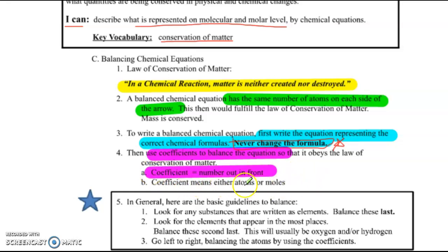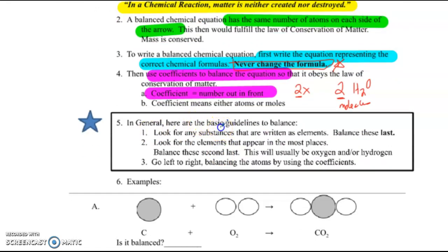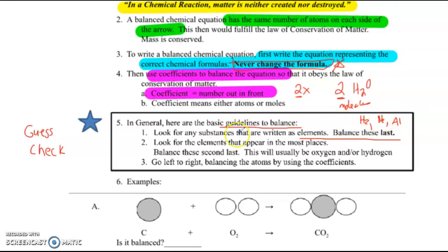What you can do is use coefficients to balance the equation. Coefficients are numbers out in front, and they mean we can read it as number of atoms or moles. Like in math class, if you had 2x, 2 is the coefficient. In chemistry class, if we had 2H2O, that means there are 2 molecules of H2O. For balancing, it's really just a guess and check. First, look for anything written as elements — like H2 or N2 by itself — and balance those last. Then look for elements that appear in the most places, usually oxygen or hydrogen, and balance those second to last. Then just go left to right, balancing atoms and using coefficients as you go.